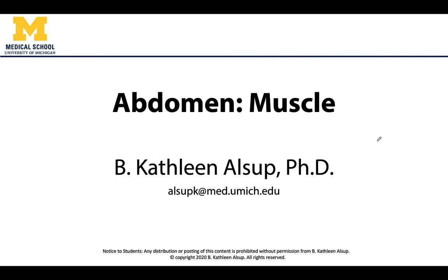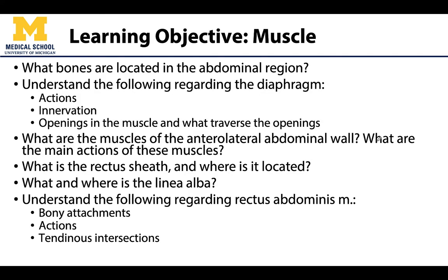Hello, this is Dr. Alsup and this will be our only video regarding the musculoskeletal anatomy of the abdomen. The focus will be primarily muscles, and we are going to start our discussion with the diaphragm, which is kind of in between the abdomen and the thorax. Then we will get into the muscles of the abdominal wall, including the anterior lateral muscles and the rectus abdominis.